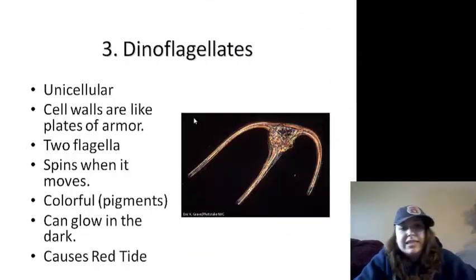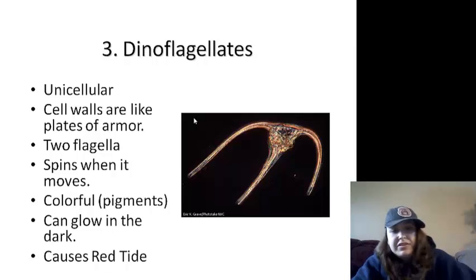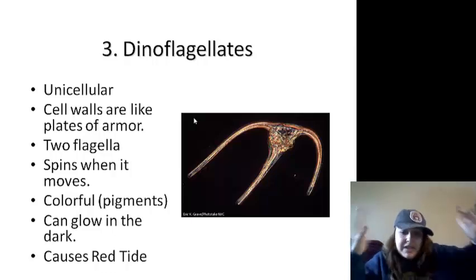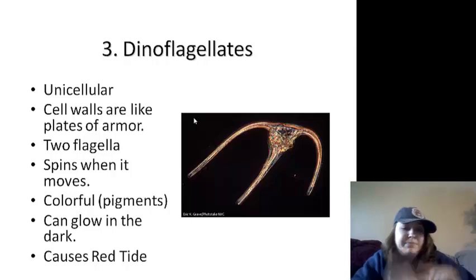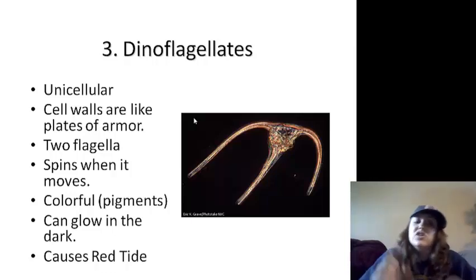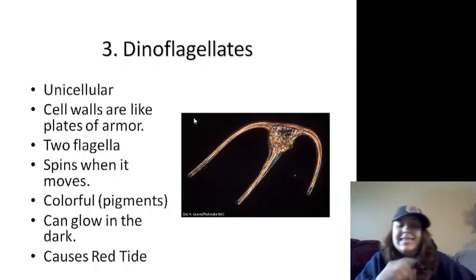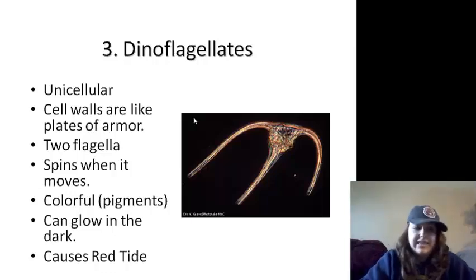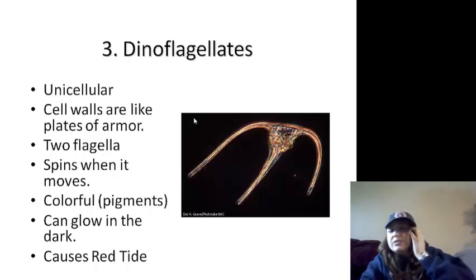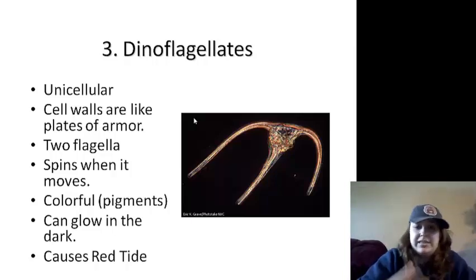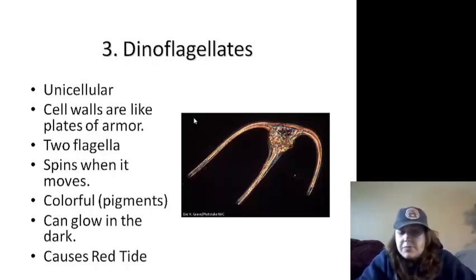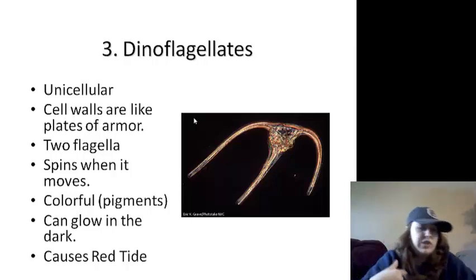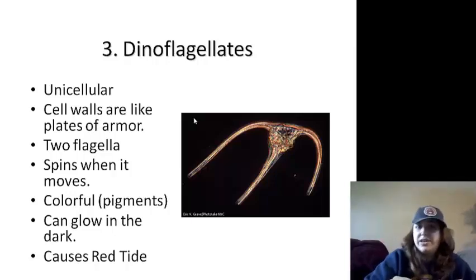Dinoflagellates are unicellular with cell walls like plated armor. They have two flagella — that's where the 'di' comes from: di-flagellates, two flagella. They spin when they move. They're colorful and can glow in the dark. They cause red tide. Red tide occurs at the beach when there is a huge algal bloom of dinoflagellates. They can be harmful to sea creatures and can also irritate our skin and cause respiratory issues, so you don't want to swim when there's a red tide.